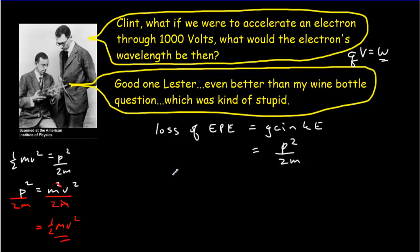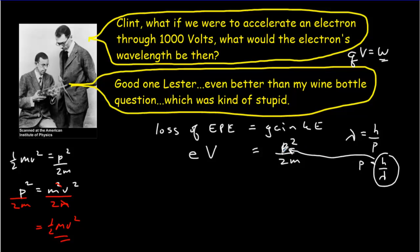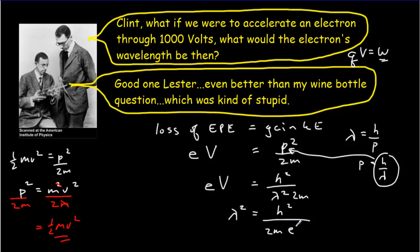The loss in electric potential energy equals the charge of the electron times the accelerating voltage V. We then substitute p equals h divided by lambda, so p squared becomes h squared divided by lambda squared, all over 2m, equal to eV. Rearranging, lambda squared equals h squared over 2m times eV. Taking the square root, lambda equals h divided by the square root of 2meV.